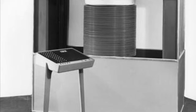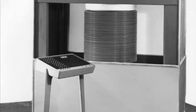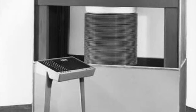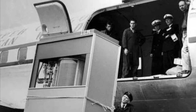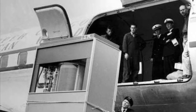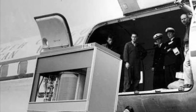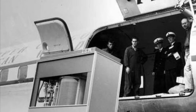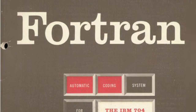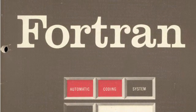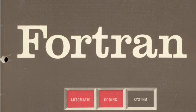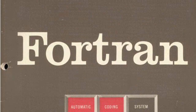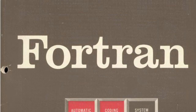IBM also introduced the RAMAC in 1956. This was the first magnetic hard drive ever made, and it cost about $10,000 per megabyte and could store up to 5 megabytes. IBM also invented Fortran in 1957, and this quickly became the most popular programming language in the world.